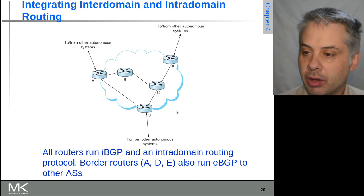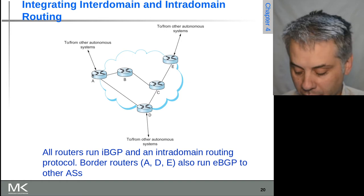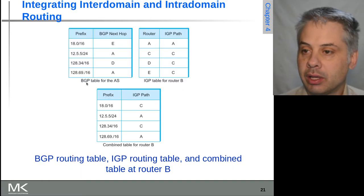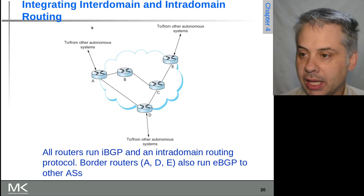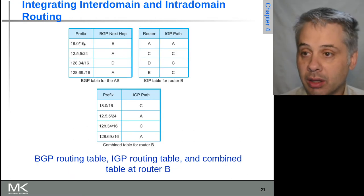Here we have a group of autonomous systems and systems within an autonomous system. So if we say that going out BGP hop E, we can see the 18.0/16 network.